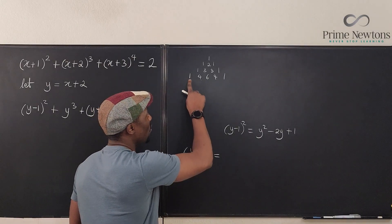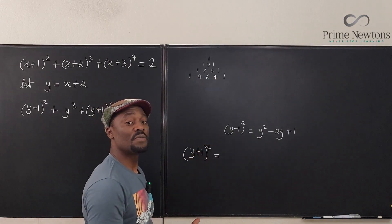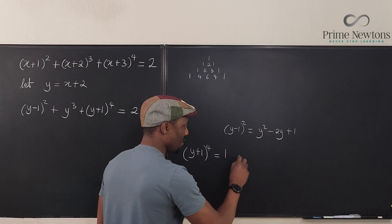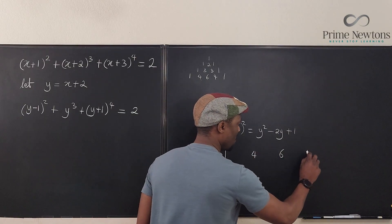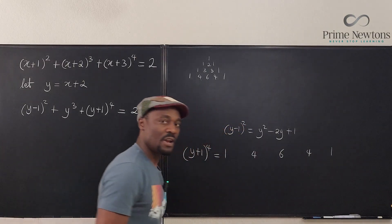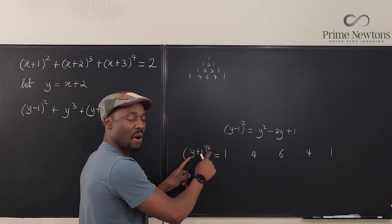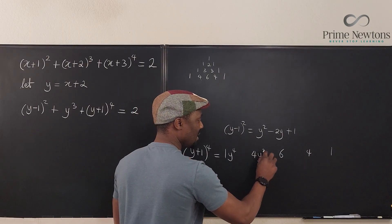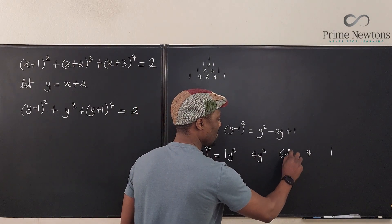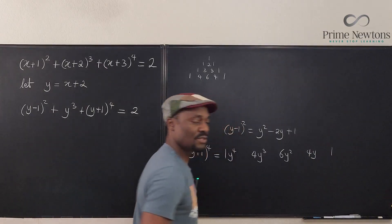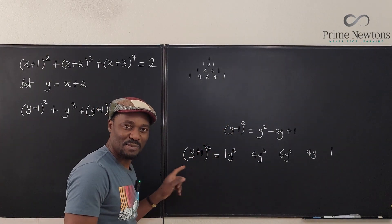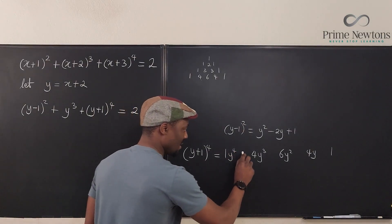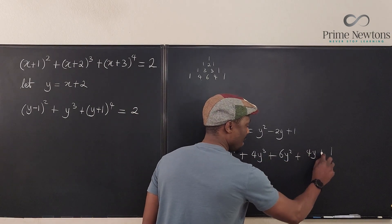So when I expand (Y plus 1) to the fourth, I expect coefficients 1, 4, 6, 4, 1. I write them out: the powers of Y go from Y to the fourth, Y cubed, Y squared, Y to the first, Y to the zero — and the other factor is just 1. So the expansion is: Y⁴ + 4Y³ + 6Y² + 4Y + 1. I just put plus signs and the expansion is done.